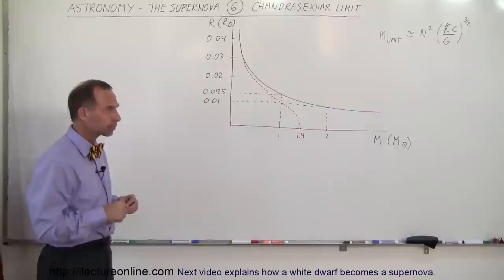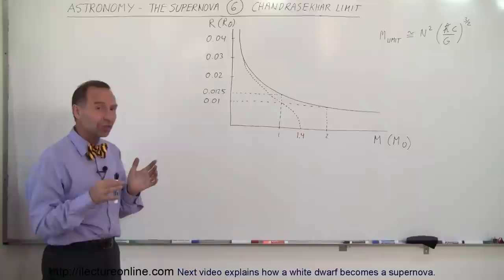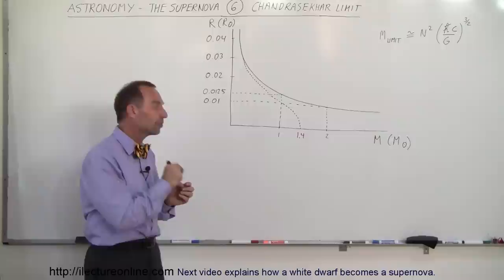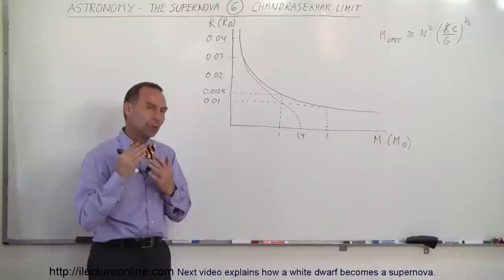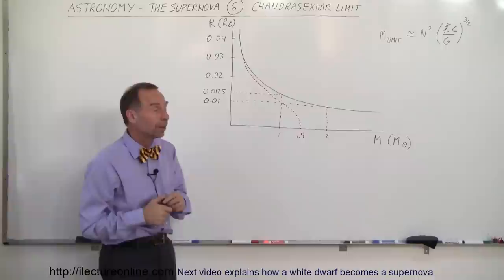So Chandrasekhar began to make some calculations along with some of the other famous scientists, and eventually they got down to the point where they realized that when the mass exceeded 1.4 times the mass of the sun, the white dwarf could no longer withstand the gravitational pressure and would collapse in on itself. Although something else would happen as well, because the temperature inside would reach a high enough temperature where nuclear fusion might begin as well.